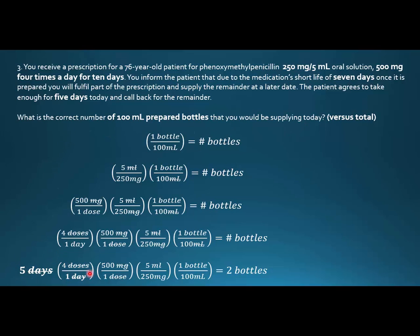The correct number of bottles you'll be supplying today would use five days. I would simplify 500 and 250 by putting a 2 and a 1, so I can do it in my head: 5 times 4 is 20, times 2 is 40, times 5 is 200. With the 100 on the bottom, 200 over 100 makes 2 bottles.